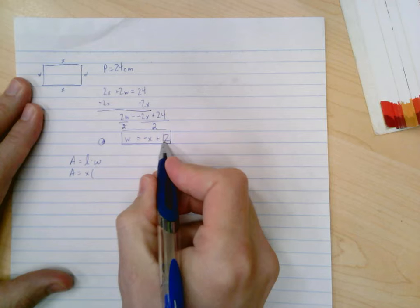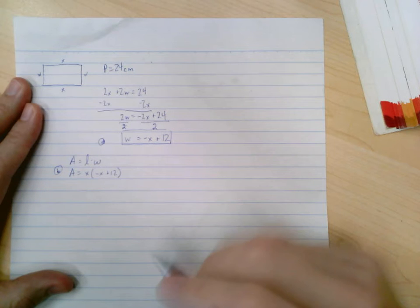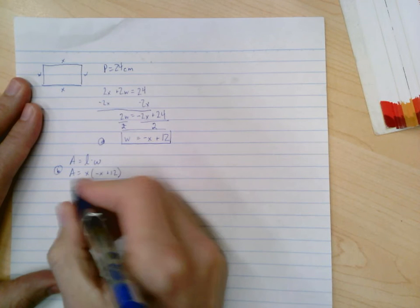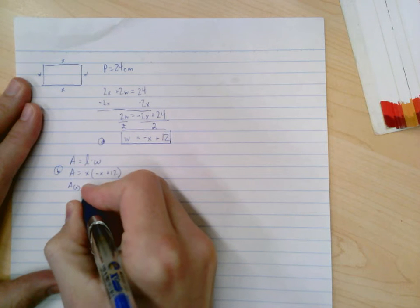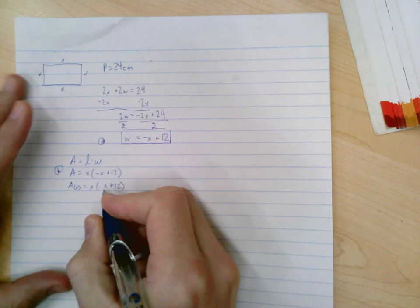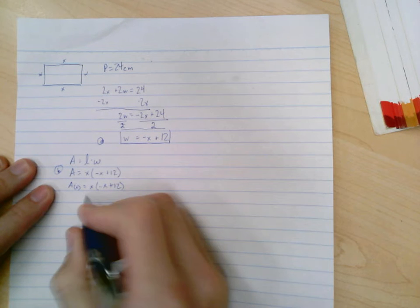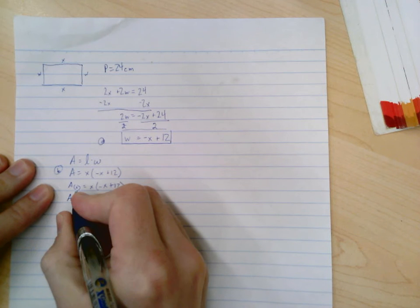Very nice. Let's move on to part c. Part c says explain the meaning of A(2). Alright, well you notice that this is a function in terms of x, so we could have written this as A of x, or that the area depends on x, equals x times negative x plus 12. And that'll make it a little bit easier to answer the next question where it says explain the meaning of A(2).